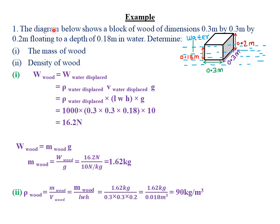Our first example reads that the diagram below shows a block of wood of dimensions 0.3 by 0.3 by 0.2. This means the length is 0.3 meters, the width is 0.3 meters, and the height is 0.2 meters, as shown in the diagram. We are told it is floating to a depth of 0.18 meters in water — meaning only 0.18 meters of the block is submerged in water.